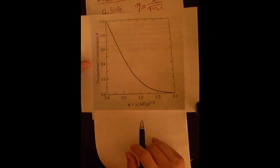And this is what it looks like right here. So this one shows the y-axis has a normalized concentration of theta, and your x-axis is the eta.